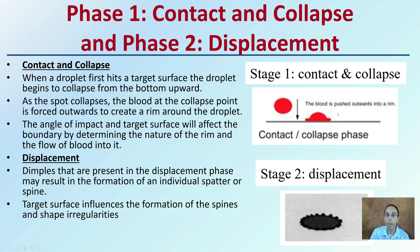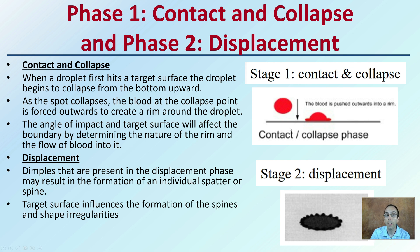Phase one is contact and collapse, and phase two is the displacement. The contact and collapse phase is when the droplet first hits the target surface, and the droplet begins to collapse from the bottom upward. The blood at the collapsing point is forced outwards, creating a rim around the droplet. This is what we can measure when looking at the impact angle.